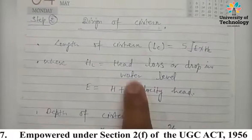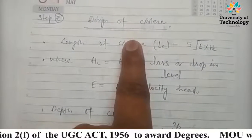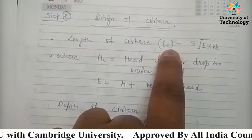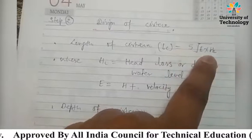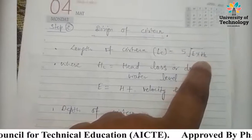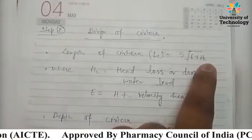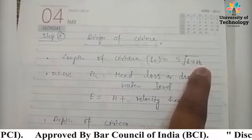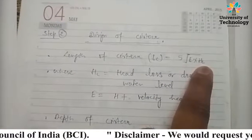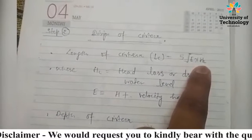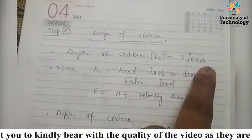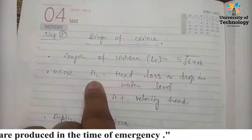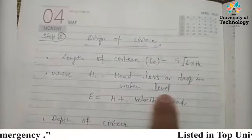Step two is the design of the cistern. The length of the cistern is represented by L_c = 5 × √(E × H_L), where H_L is the drop — the difference between the upstream FSL and the downstream FSL. H_L is also known as head loss or drop in water level.